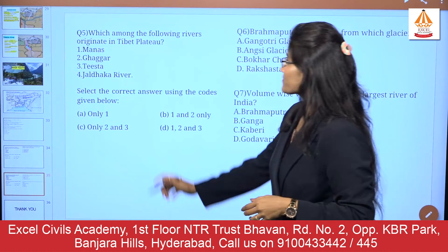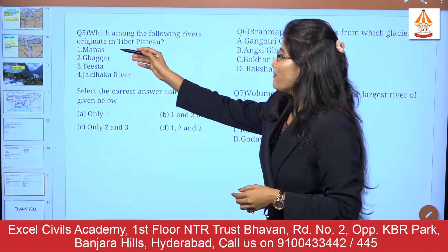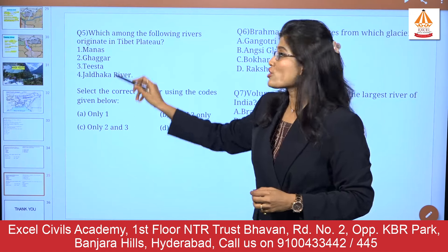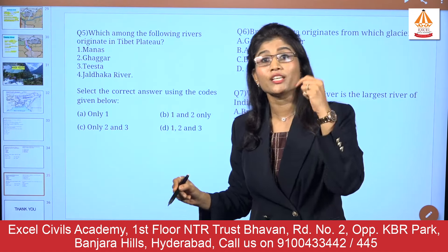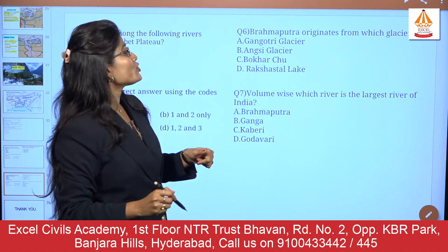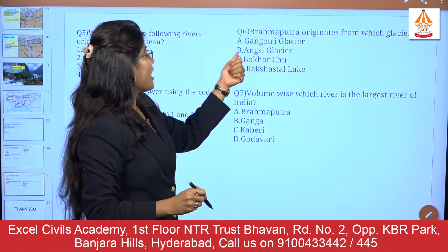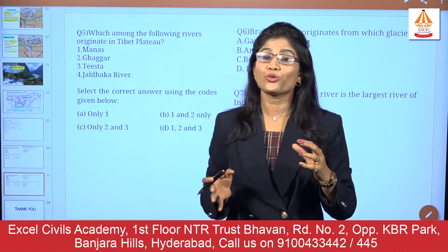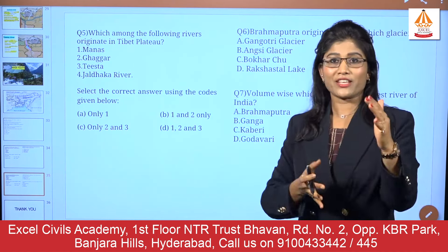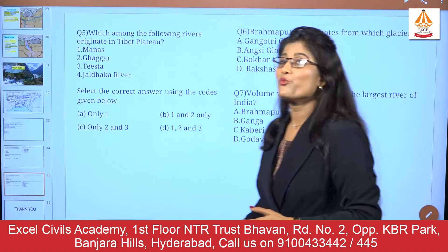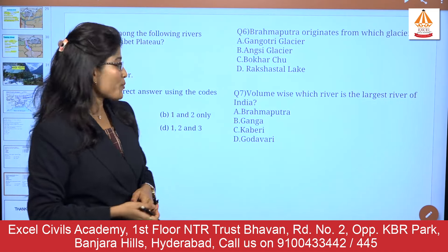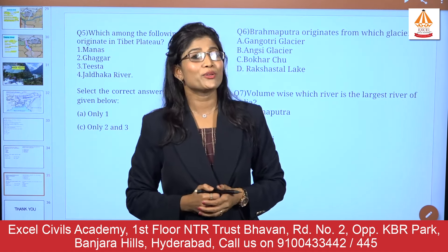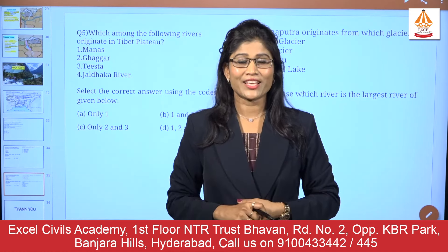Last questions: which among the following rivers originate in the Tibetan Plateau — Manas, Gagar, Tista, or Jal Dhaka? You should have a proper understanding of the origin of rivers, especially those from the Tibetan Plateau. Also: the Brahmaputra originates from which glacier — Gangotri, Angsi, Bokharchu, or Rakshastal? And finally: volume-wise, which is the largest river of India — Brahmaputra, Ganga, Kaveri, or Godavari? These questions may seem easy but can be confusing during the examination. Thank you, stay tuned.